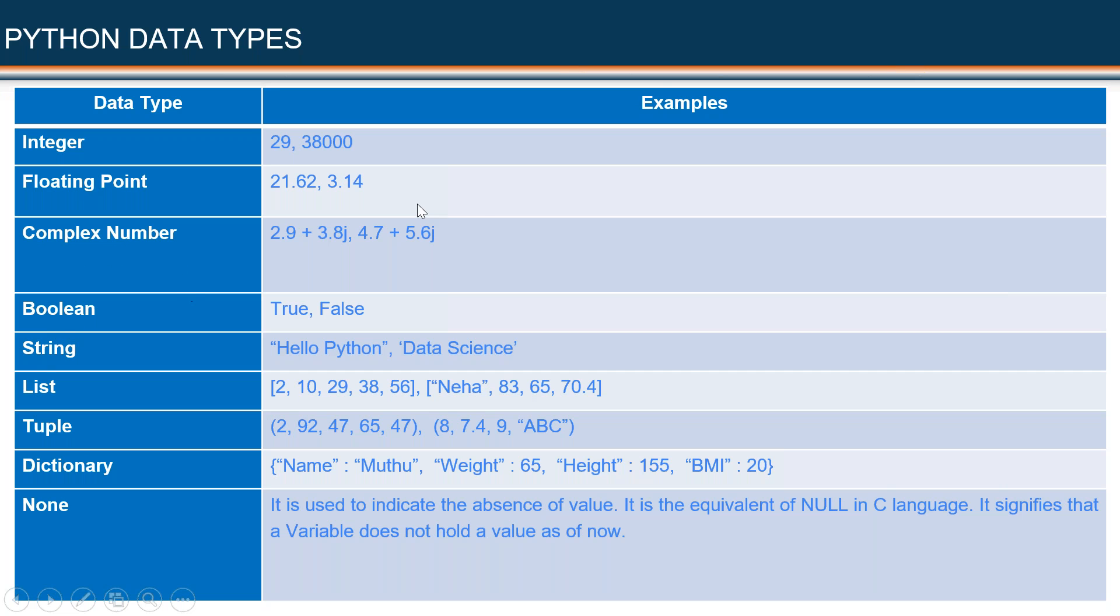What about the Boolean data type? All of us would have heard about Boolean algebra. In the normal decimal system, we have the digits 0, 1, 2, 3, 4, etc.